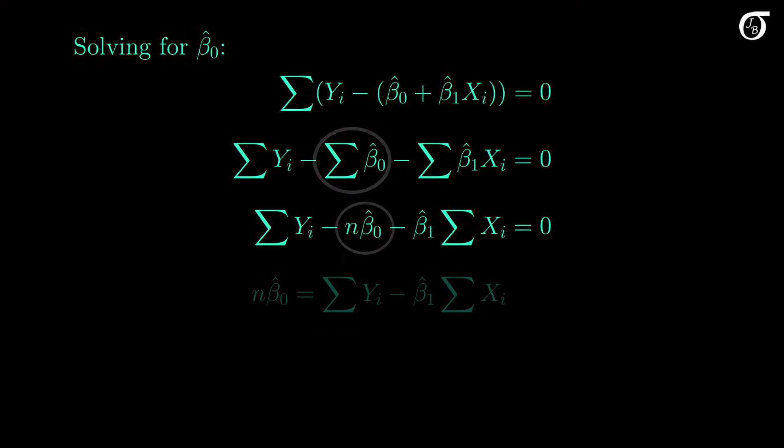The sum of beta0 hat from 1 to n turns into n times beta0 hat, and beta1 hat comes outside of the summation in its term. Now if we isolate the n times beta0 hat term, we get this. Dividing both sides by n, we get this. The sum of y over n is y bar, and the sum of x over n is x bar. And we end up with beta0 hat equaling y bar minus beta1 hat times x bar.